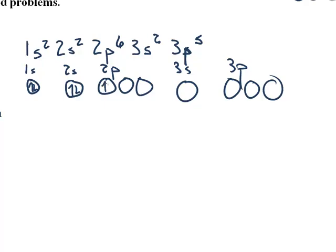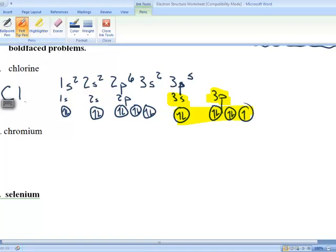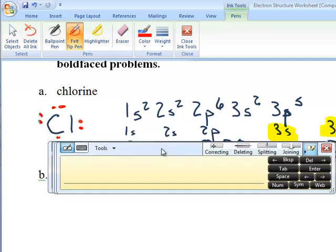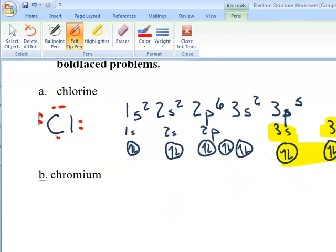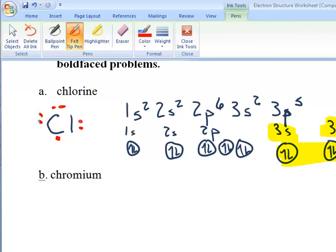Counting 1, 2, 3, 4, 5, 6, 7, 8, 9, 10, 11, 12, 13, 14, 15, 16, 17 electrons. Now my electron dot structure is going to show the electrons in the highest energy level. That's going to be the third energy level. So I'm going to draw in these 7 electrons. So those are going to look something like this: 1, 2, 3, 4, 5, 6, 7 valence electrons. So that's how this process works.